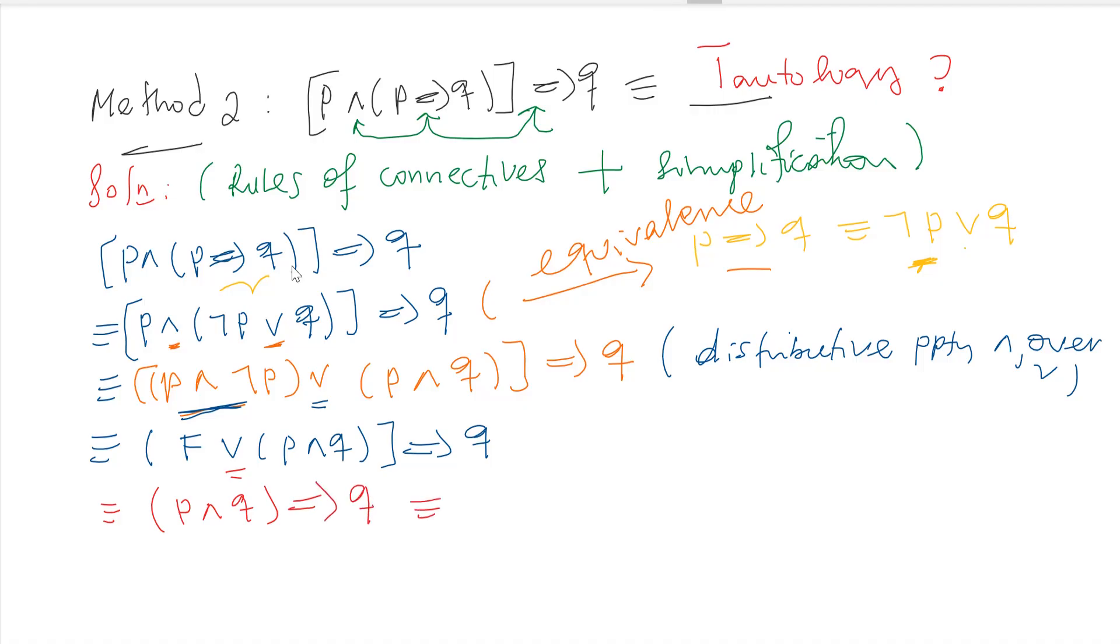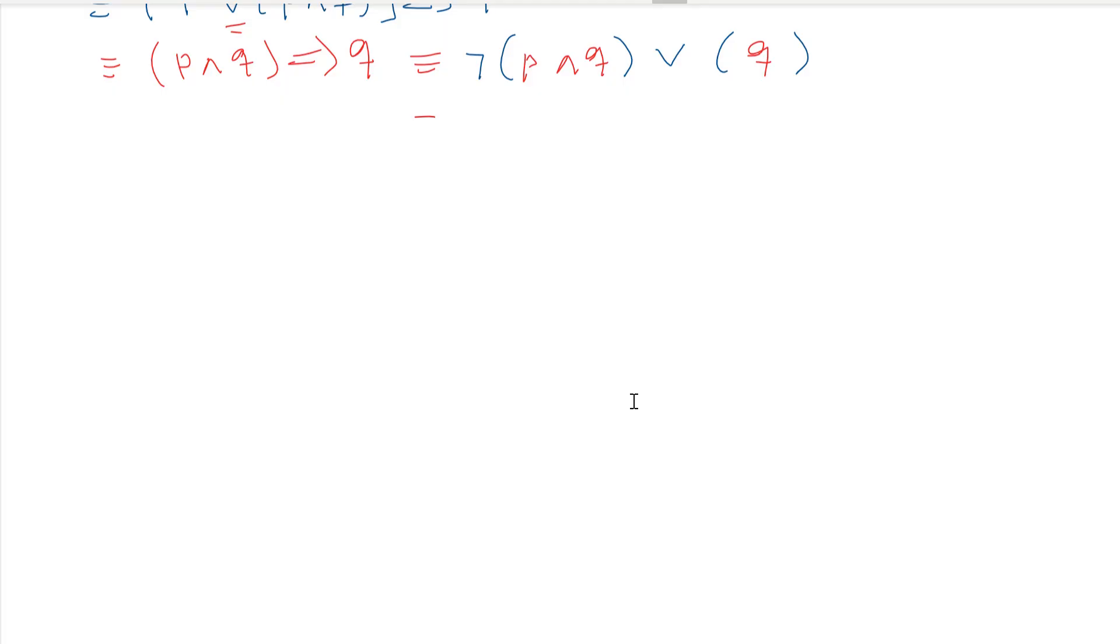[p ∧ q] implies q. Implication is equivalent to the negation of the first bracket or the second bracket. What is the first bracket? [p ∧ q]. What is the second bracket? q. So this is equivalent to here, we will apply De Morgan's law.